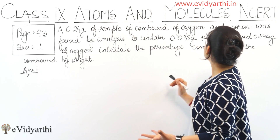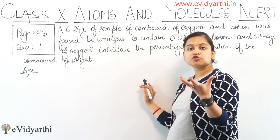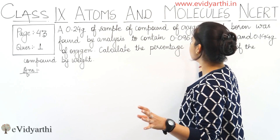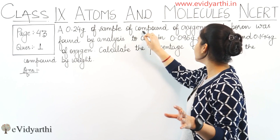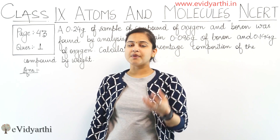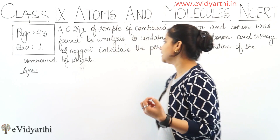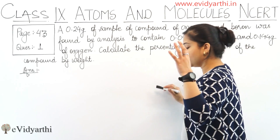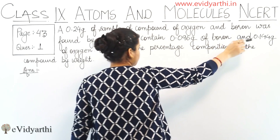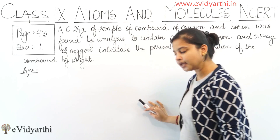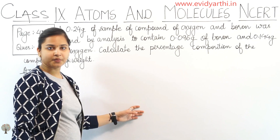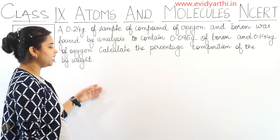So we have a sample of weight 0.24 grams of oxygen and boron. The compound is made by oxygen and boron, and the weight of the compound is 0.24 grams. So we have to calculate the percentage composition of compound by weight.